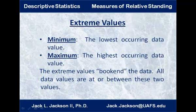The first two are probably the easiest. The minimum is the lowest occurring data value and the maximum is the highest occurring data value. So the one whose value is highest is the maximum. These two values sort of bookend the data — all the data values are at or between these two values.